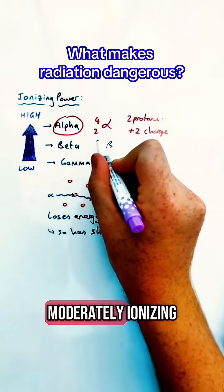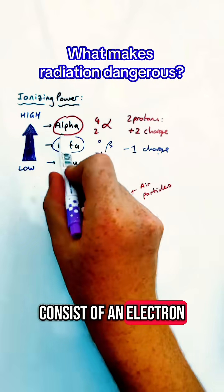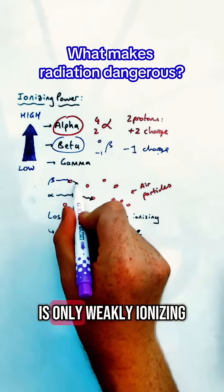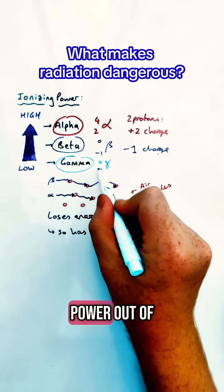Beta particles are moderately ionizing. They have a charge of minus one as they consist of an electron, and gamma radiation is only weakly ionizing, meaning it has the lowest ionizing power out of the three.